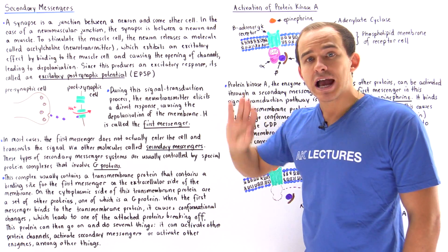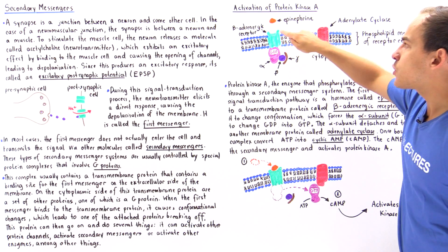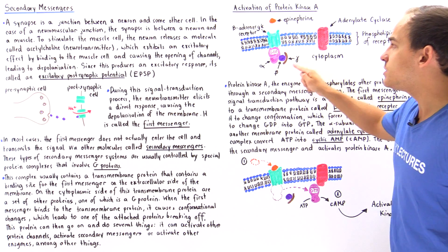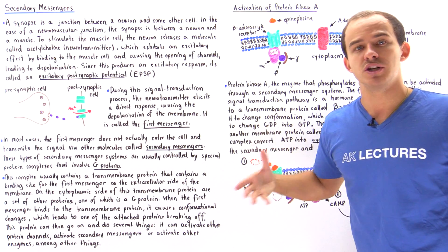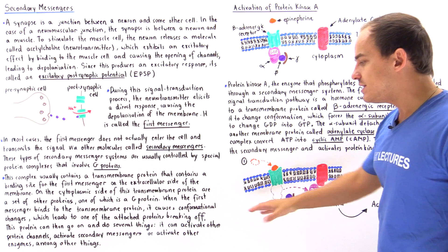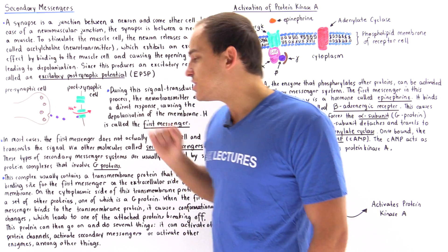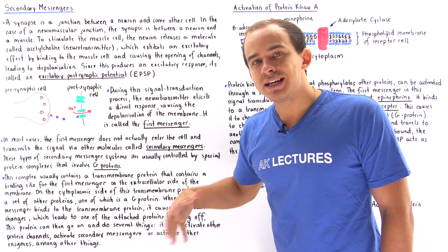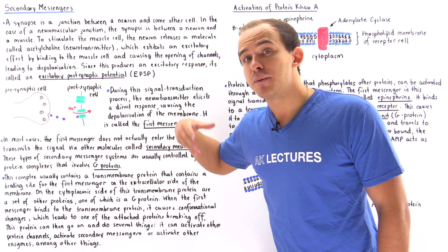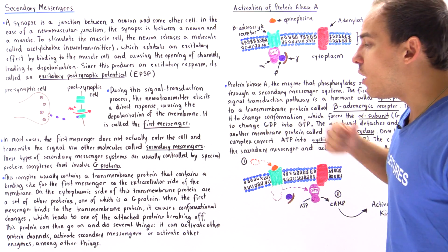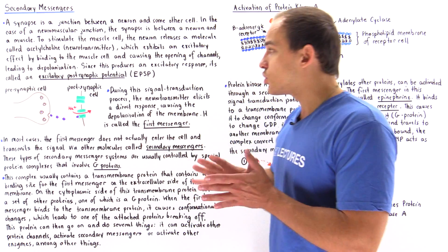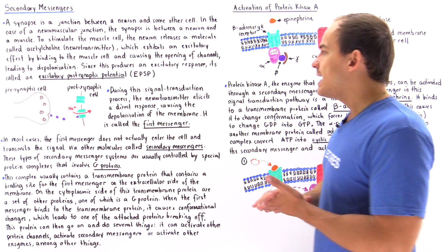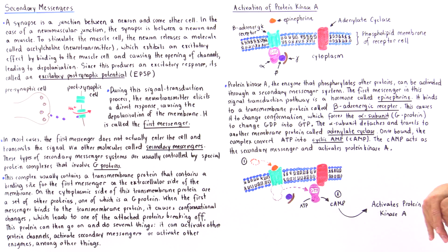Once our first messenger binds to the transmembrane protein, it causes the dissociation of one of these proteins — usually the G-protein. Once the G-protein detaches, it can activate other protein channels, activate secondary messenger molecules, activate other enzymes, or even transcribe genetic information, as we'll see in a future lecture on biochemistry.